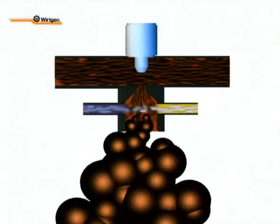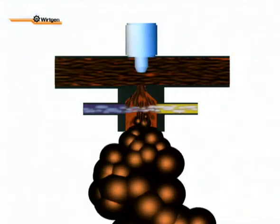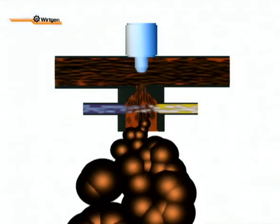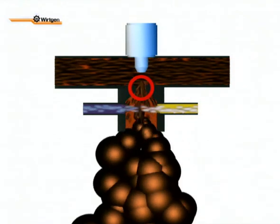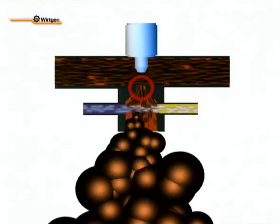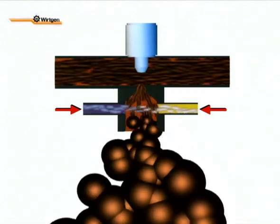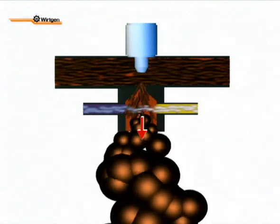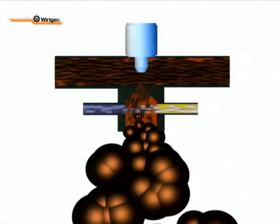This computer animation shows you what we cannot show you in reality: a view inside one of our spraying system's expansion chambers. The hot bitumen comes out of the pressure pipe via a nozzle into the expansion chamber. There, about 2% cold water and air are injected simultaneously. The bitumen foams explosively and shoots through the opening down into the mixing chamber.